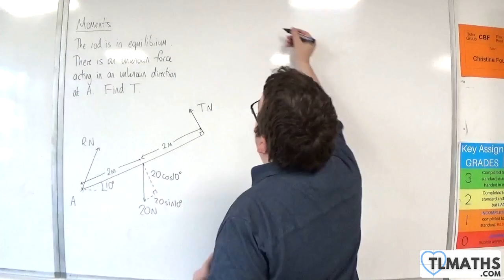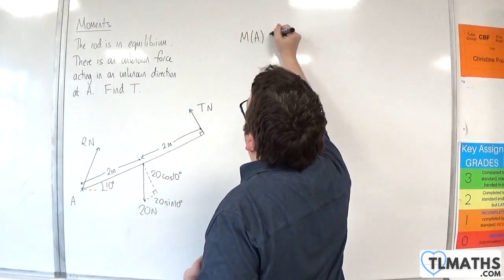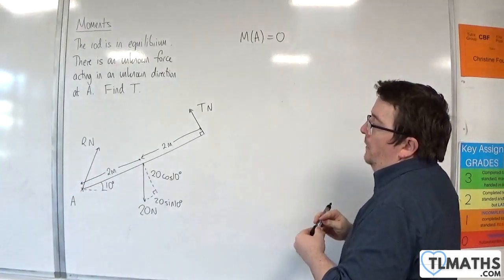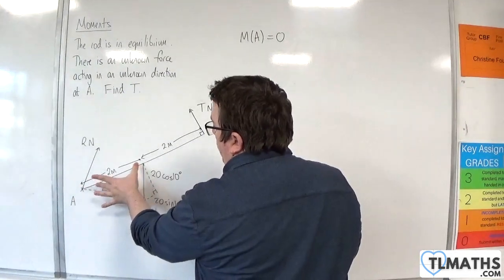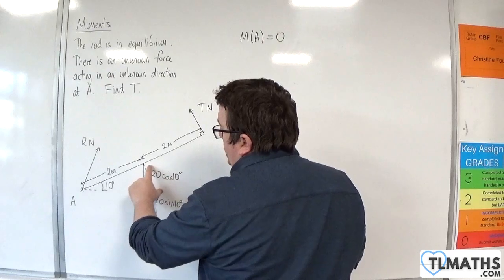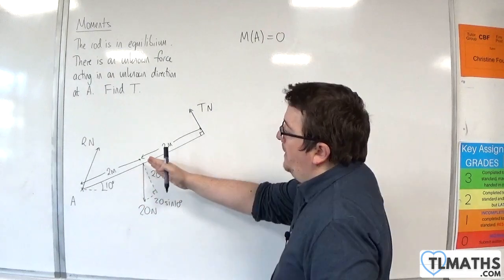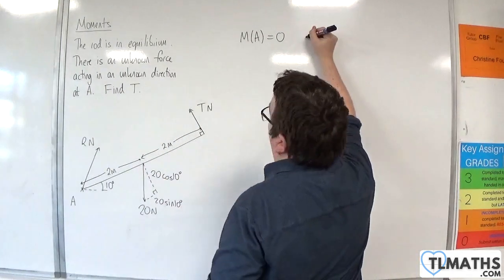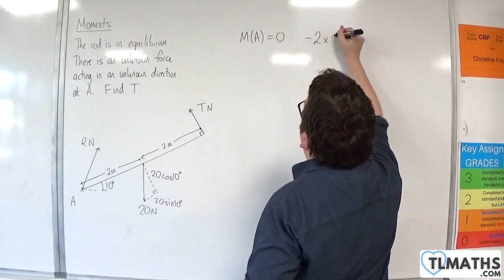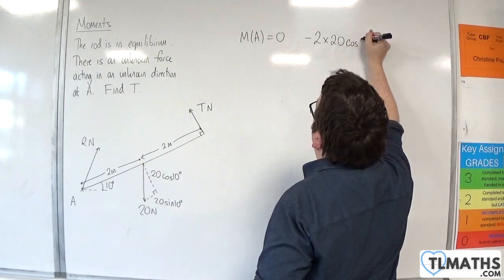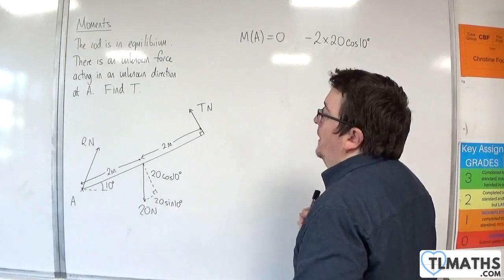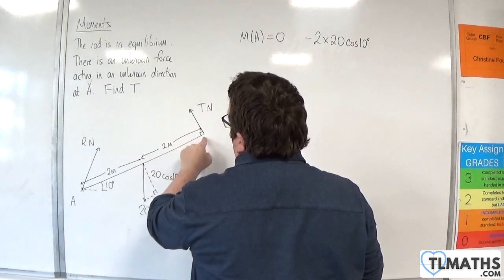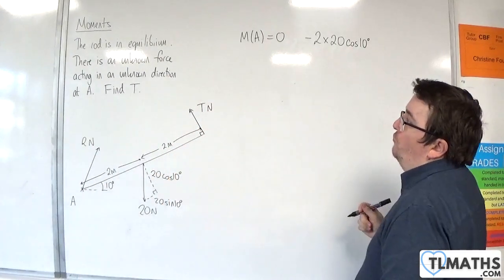So taking moments about point A allows me to disregard R because it's acting through A, and I am 2 metres away from the 20 cosine 10. Now that's going to be going around in that direction, a clockwise motion. So take away 2 times 20 cosine 10, and then we're 4 metres away from the T-Newton force, which is perpendicular to the rod.